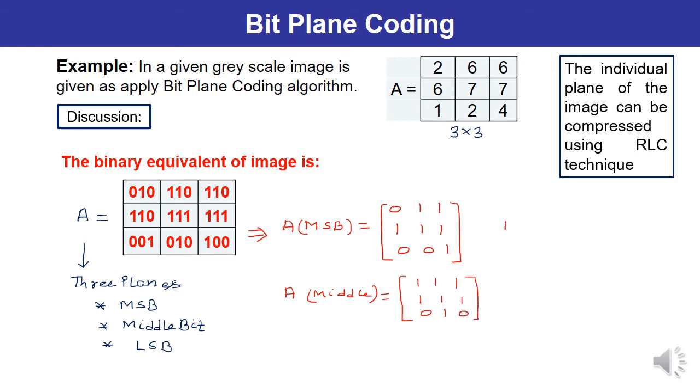Similarly, you can write down the LSB plane, and this would be: 0 0 0, 0 1 1, 0 0 0. So in this way you can write it down. Individual planes of the image can be compressed using RLC.